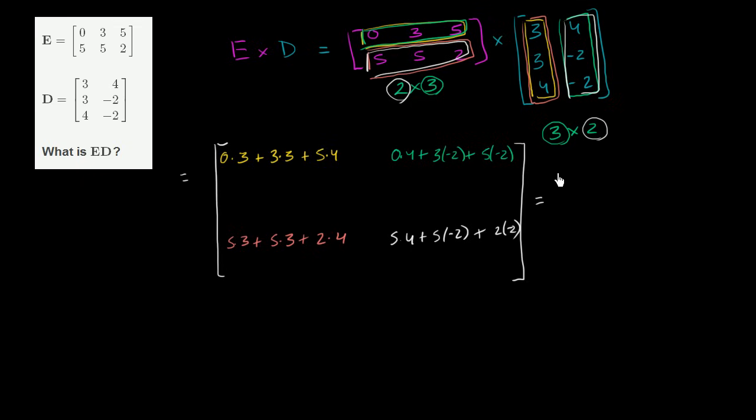And so this is going to be equal to, and we can just evaluate this now. Let's see, 0 times 3 is 0, this is 9, plus 20, this is 29. This all simplified to 29. All of this, this is 0, this is -6, and then this is minus 10. So this all simplifies to -16.